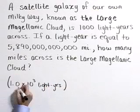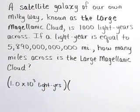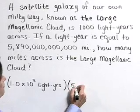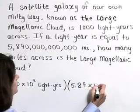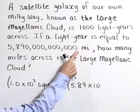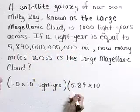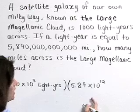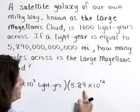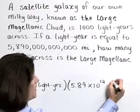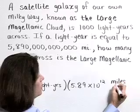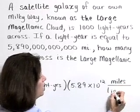Now we're going to take that and we're going to multiply it times our 5,890,000,000,000 miles in a light-year. So we're going to write that as 5.89 times 10 to the twelfth power. And our units here are 5.89 times 10 to the twelfth miles per light-year.